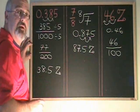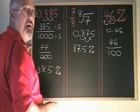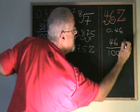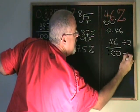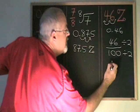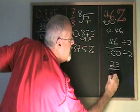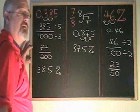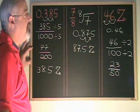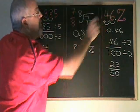This fraction can be reduced though because the top and bottom have a common factor of 2. 46 divided by 2 is 23. 100 divided by 2 is 50. 23 fiftieths cannot be reduced any further and is the fraction form of 46 percent.